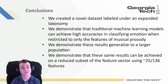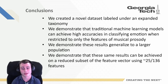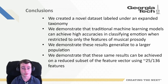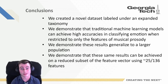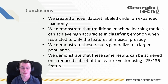To conclude, we accomplished a number of things in this paper. First, we created a novel dataset labeled under an expanded taxonomy compared to prior work. Next, we demonstrate that traditional machine learning models can achieve high accuracies in classification when restricted to only the features of musical prosody. We show that these results generalize well to a larger population by including multiple singers. And finally, we demonstrate that the same results can be retrieved when training on a reduced subset of approximately 25 out of 136 total features. Check out our full paper — link in the description below. Thanks for watching, and happy developing!